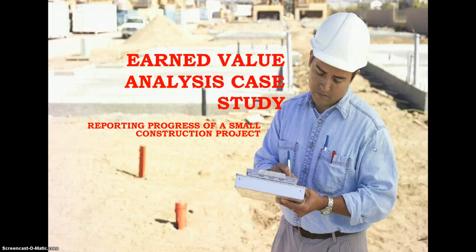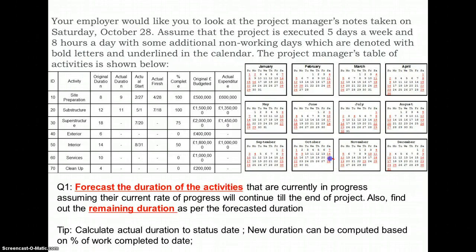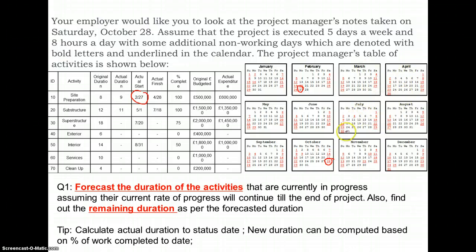Hello, greetings. In this example we will learn how to undertake earned value analysis using an example of a small construction project. The scenario being considered here is that your employer would like you to report progress of the project on October 28th. The calendar which we will be using for this case study is given here, and the reporting period is October 28th. This project actually started on 27th of February.